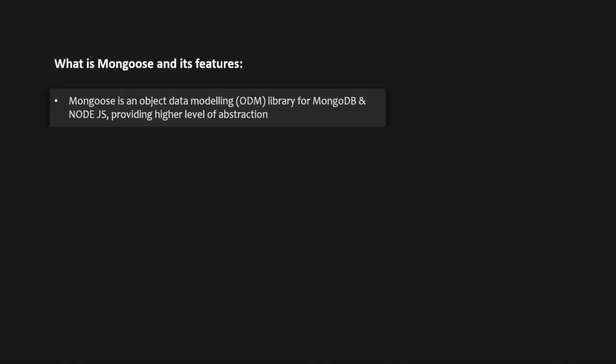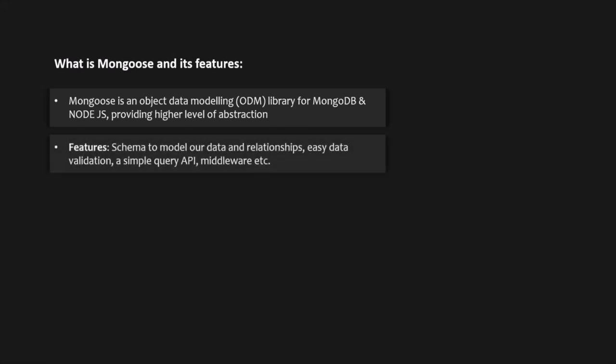Some of the features Mongoose gives us are: schema to model our data and relationships, easy data validation, a simple query API, middleware, and much more.